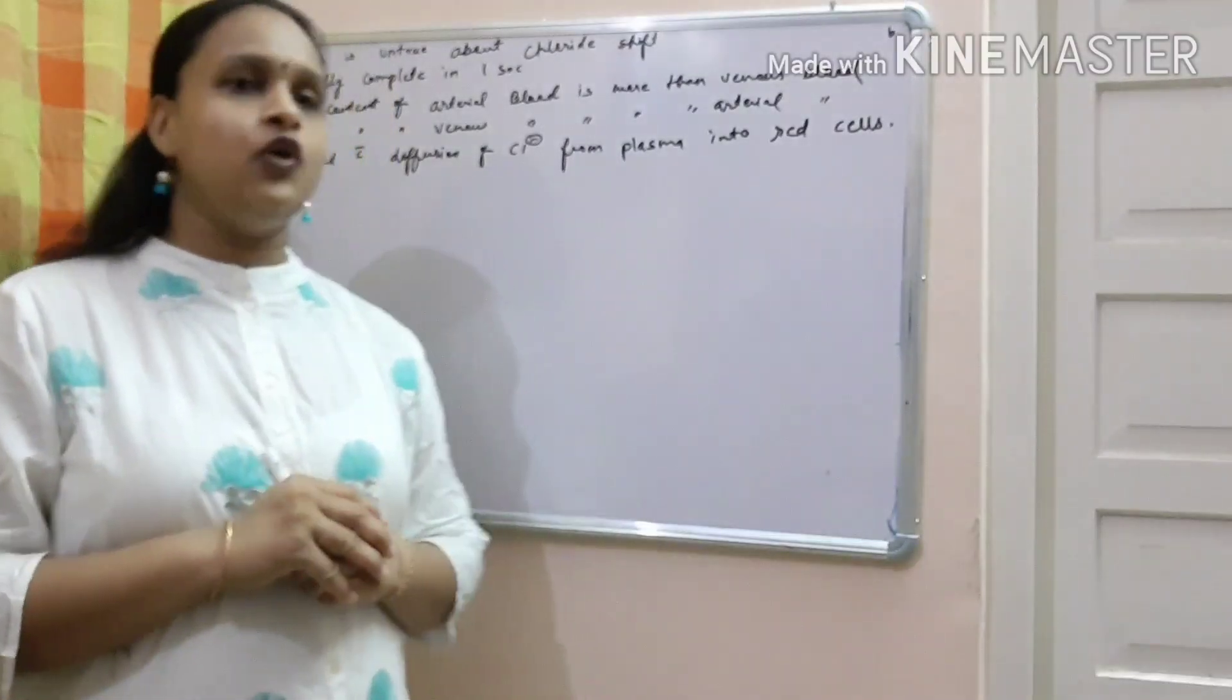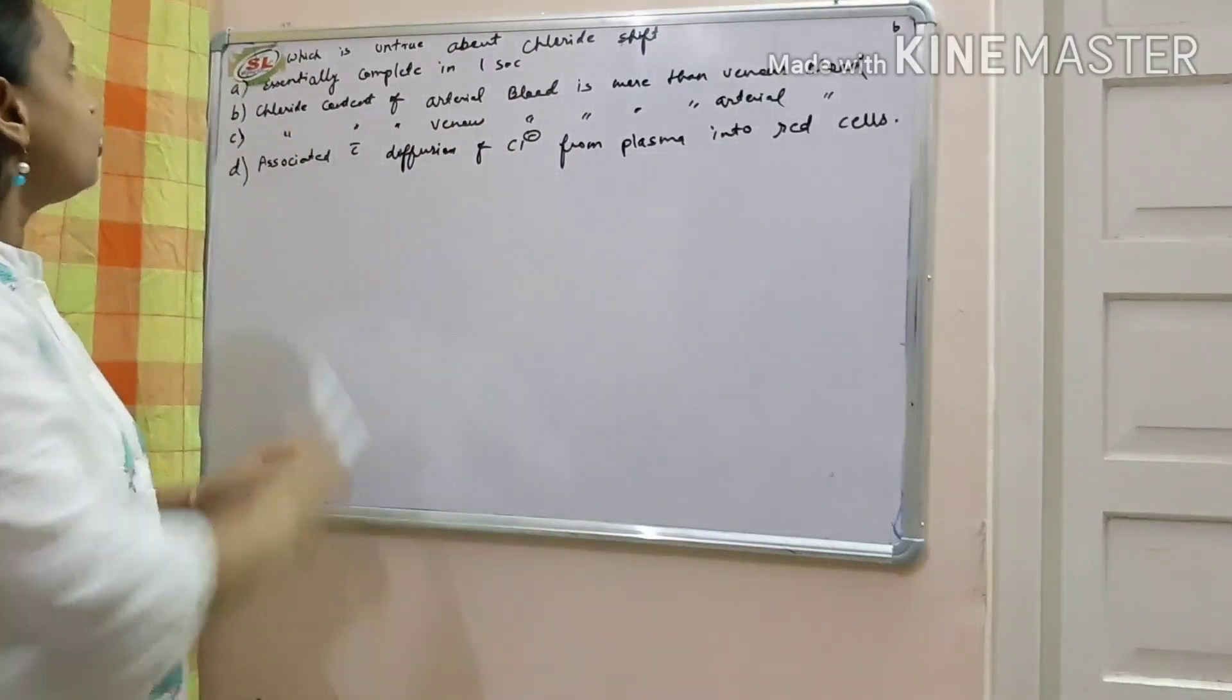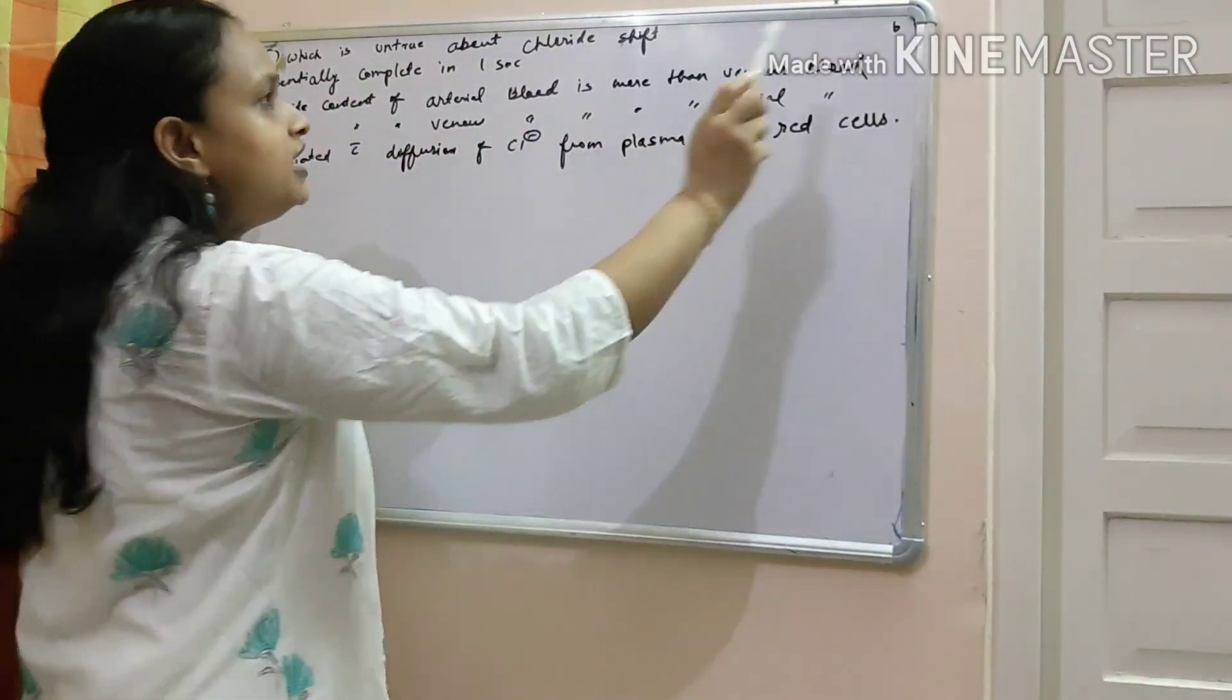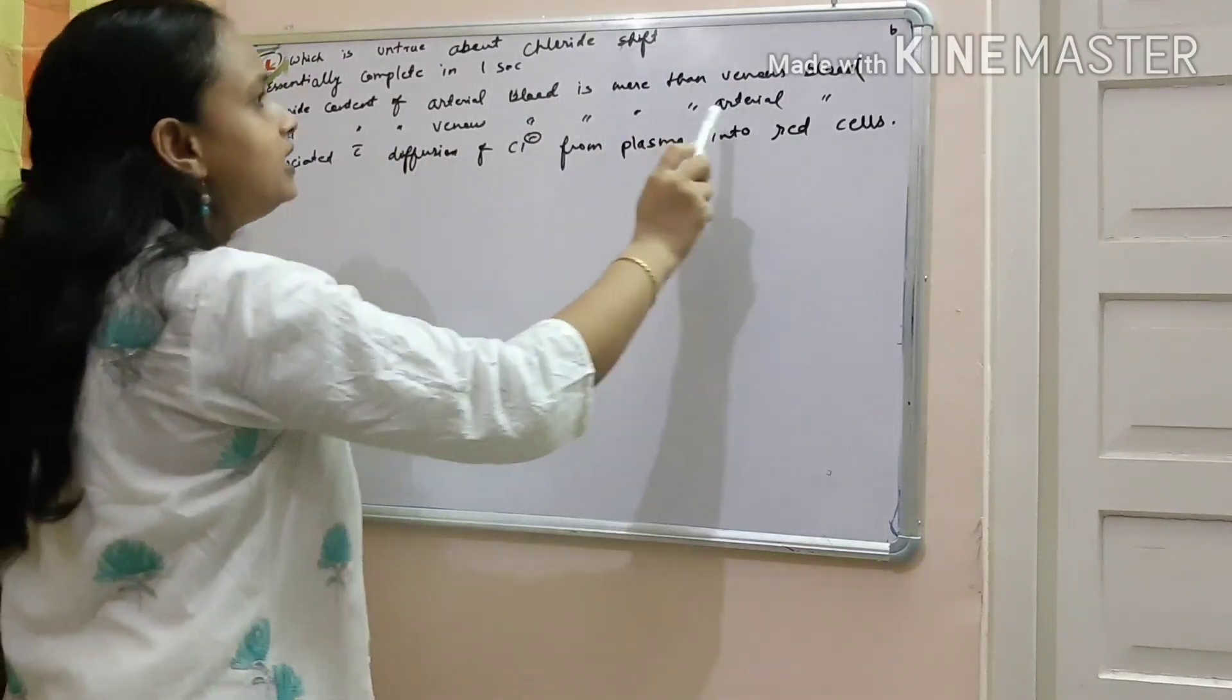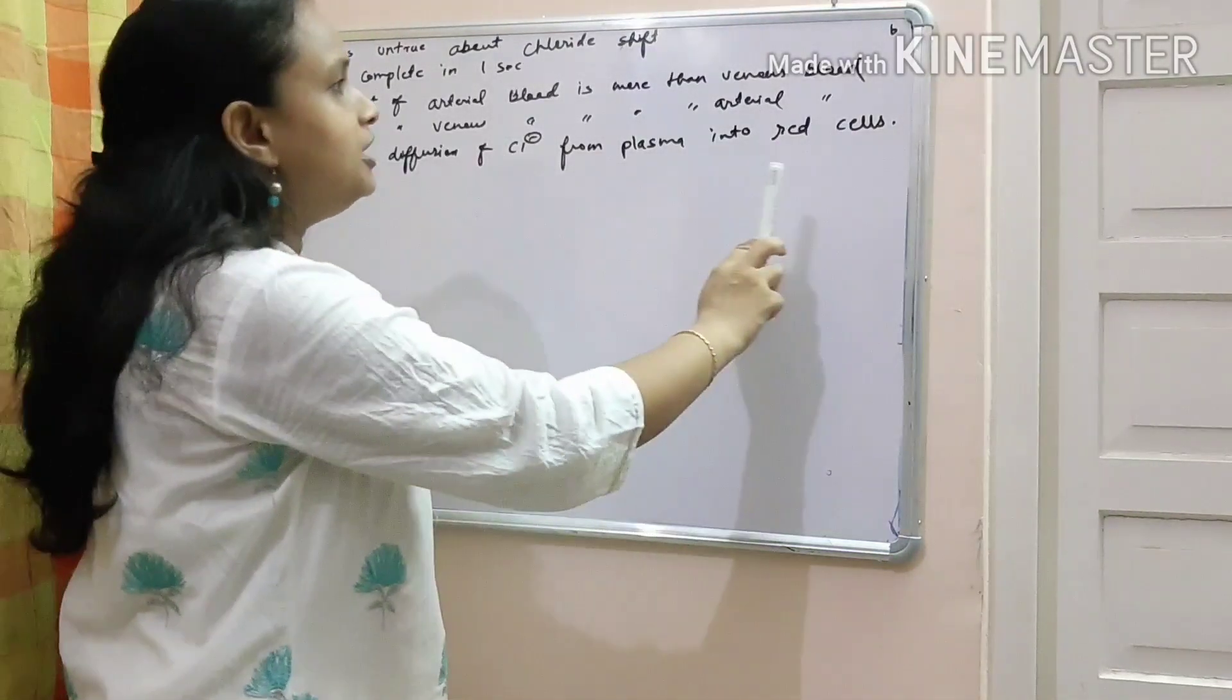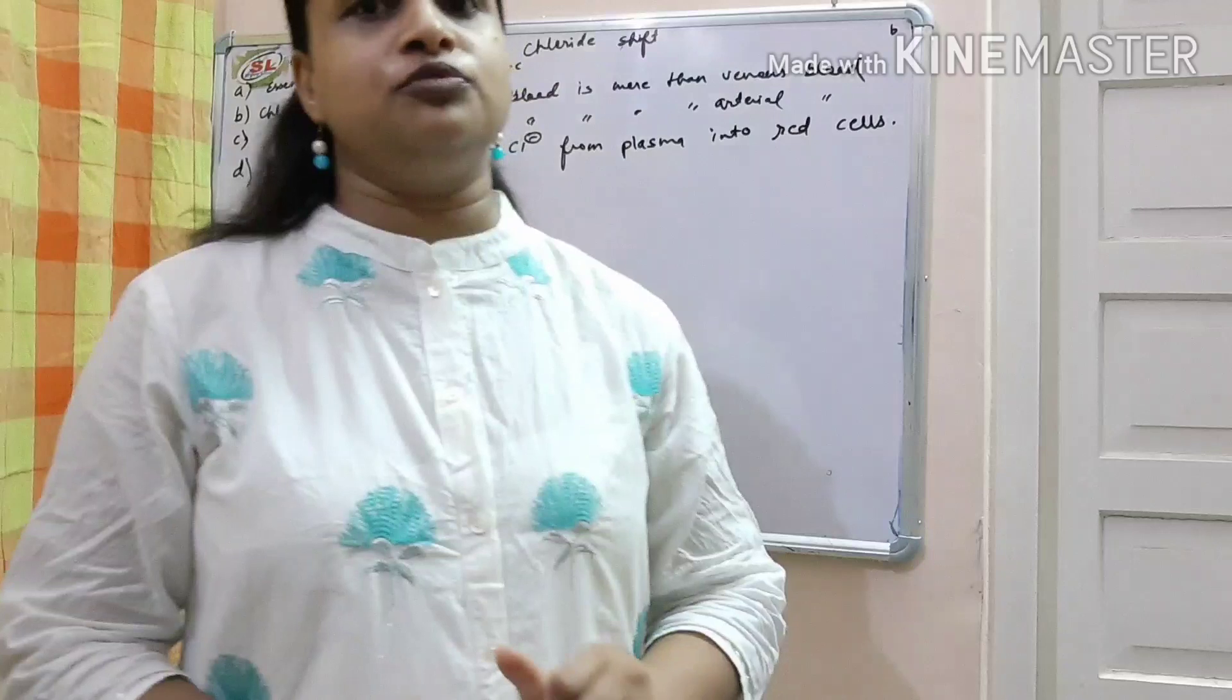The question number 9 was, which is untrue about chloride shift? So there were 4 options: essentially complete in 1 second; chloride content of arterial blood is more than venous blood; chloride content of venous blood is more than arterial blood; and the last option is associated with diffusion of chloride from plasma into red cells. We have to mark the untrue or false option.